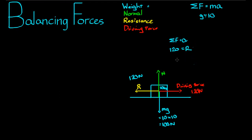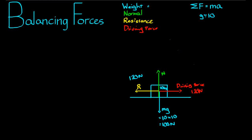This is my preferred method — once you start involving negatives it gets a bit dodgy. Try to reason the direction of the arrows yourself. So we've got the driving force, the weight force, and the resistance force. The last force is the normal force. We know the sum of forces in the vertical direction is also equal to zero because acceleration is zero. Therefore forces acting up must equal forces acting down, so the normal force is equal to 100 newtons.